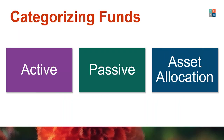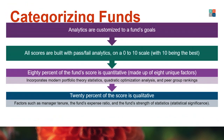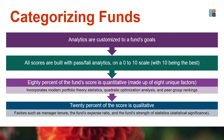Now that we've established the foundation of what the scorecard is, I'm going to go over how RPAG actually scores these funds. RPAG categorizes funds into three main buckets or lenses: active, passive, and asset allocation. Putting funds into these categories allows us to customize analytics within each scorecard to the fund's or investment strategy's goals. All scores are built on pass-fail analytics and placed on a scale from zero to 10. In terms of general structure, 80% of the fund score is quantitative and 20% is qualitative.